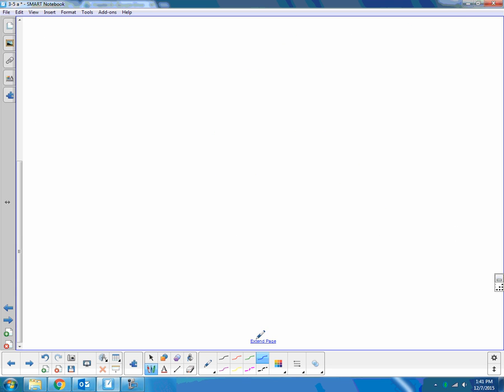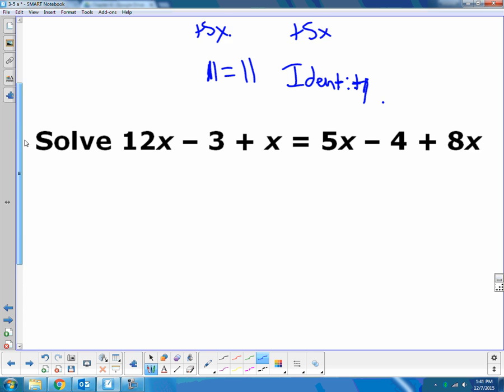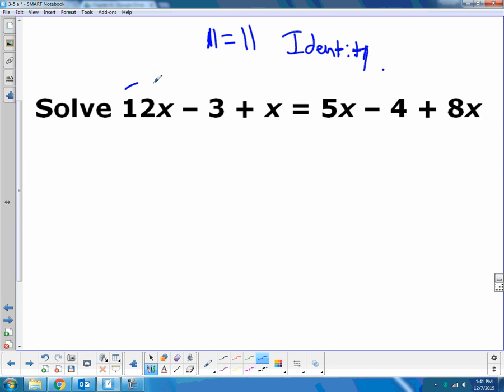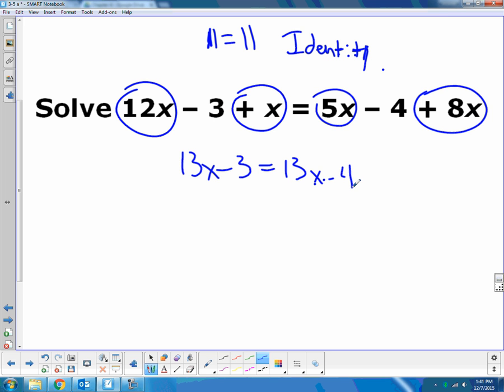Similarly, when we had a problem like this, and we simplified to 12x plus another x is 13x, and 5x plus 8x is also 13x. If I got all my x's together, I'd subtract 13x from both sides, I'd end up with negative 3 equals negative 4, which is obviously not true, that negative 3 does not equal negative 4. We call that a contradiction.